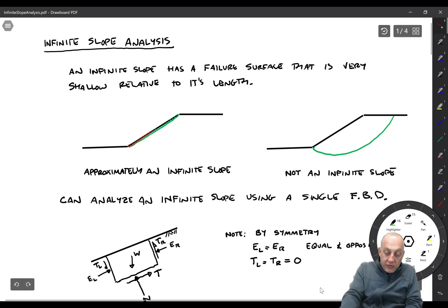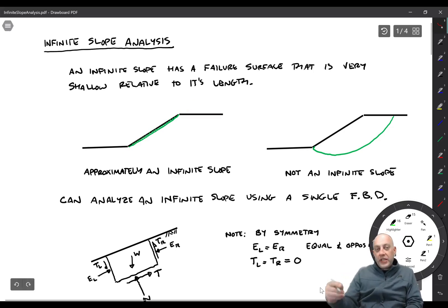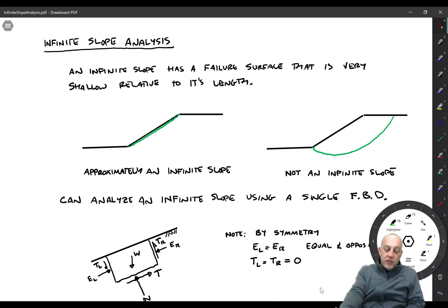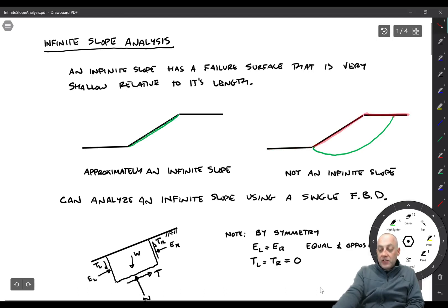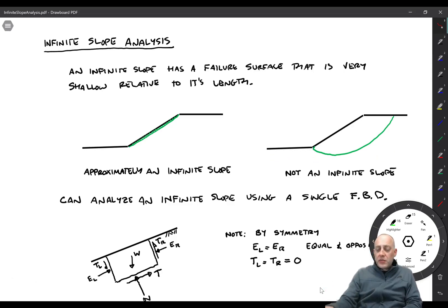Technically, the slope would have to extend infinitely uphill and downhill to truly be an infinite slope. But as long as the depth of the failure plane is small enough, we can approximate it as an infinite slope. This one is approximately an infinite slope; this other one is not even close — you can see these corners are definitely part of the failure surface. We would never use an infinite slope analysis for that kind of free body diagram, because what's happening on the left and right sides are totally different.